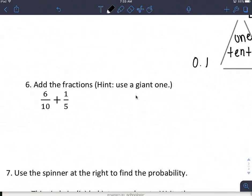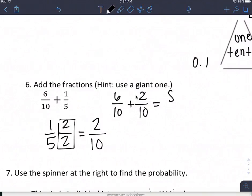All right, adding the fractions, I'm going to use a giant 1. I know that 5 goes into 10, so I really only need to change this one fraction. I'm going to change 1 fifth so that I have a fraction of 10. 5 times 2 is 10, 1 times 2 is 2. So I'm going to take 6 tenths and add 2 tenths. 6 plus 2 is 8. I leave my denominators the same. 8 tenths is my answer, but I can also simplify. I'm going to divide both of those by 2, and I get 4 fifths.